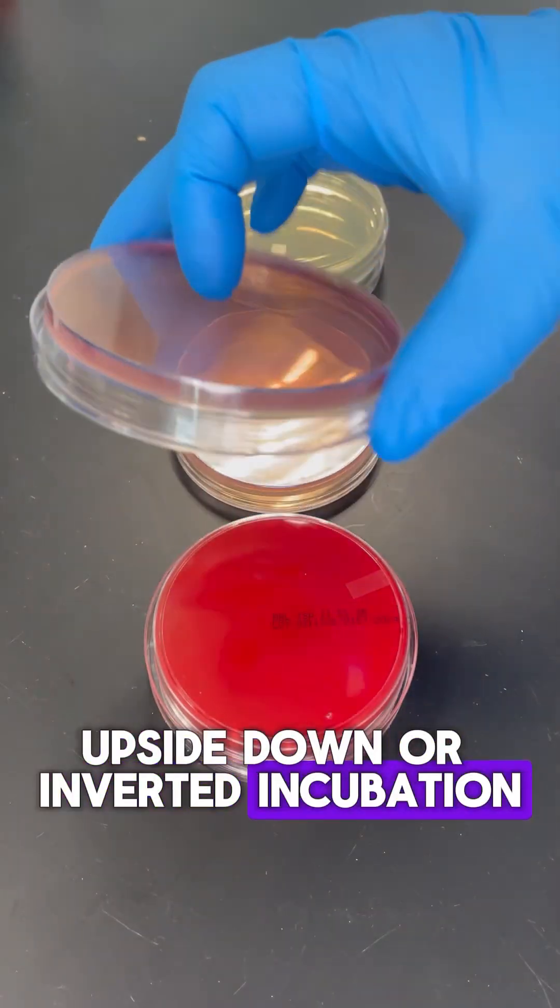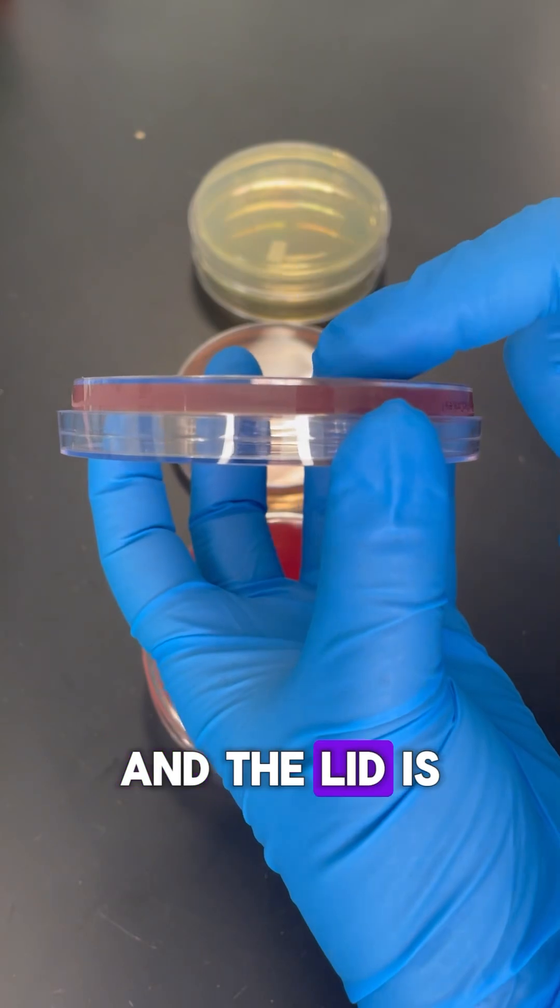Upside down or inverted incubation is when the agar side of the plate is up and the lid is on the bottom. But why? Well, there are a few reasons.